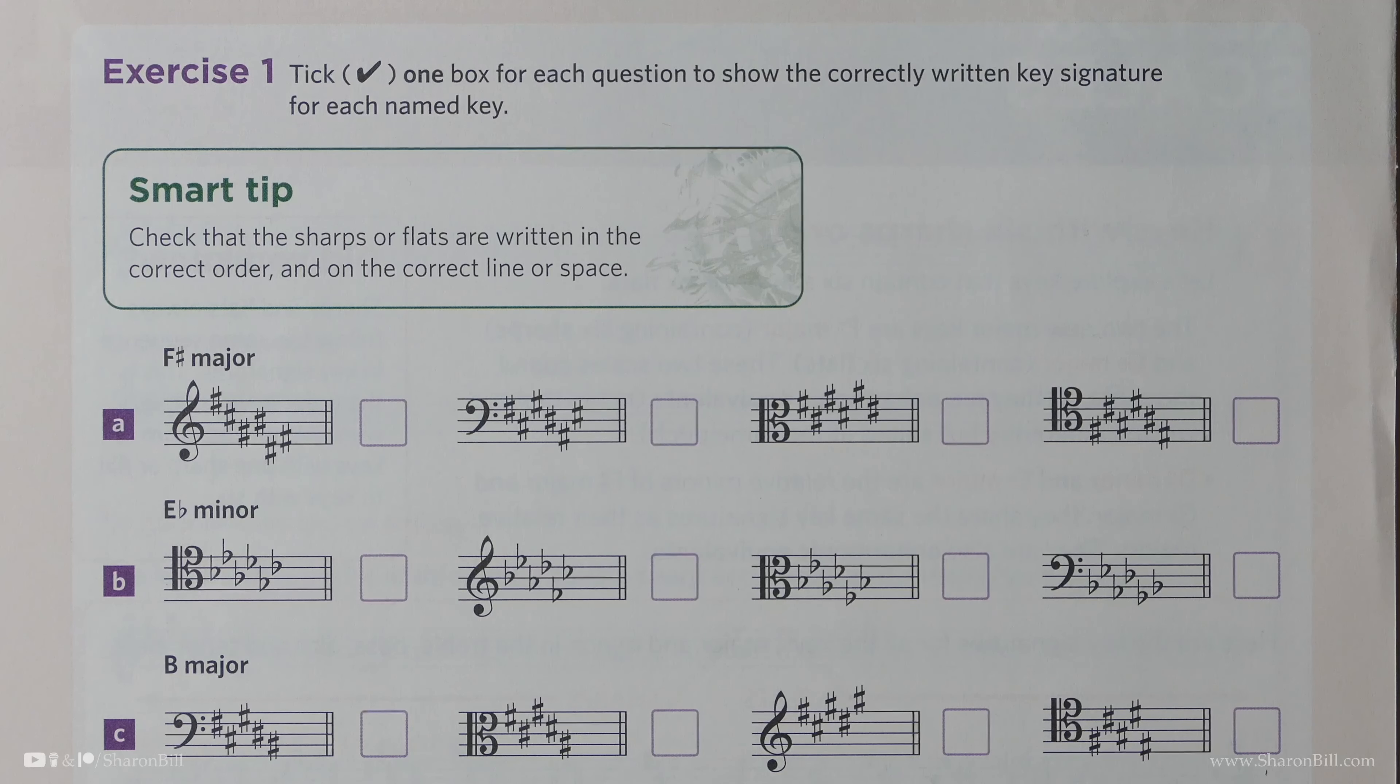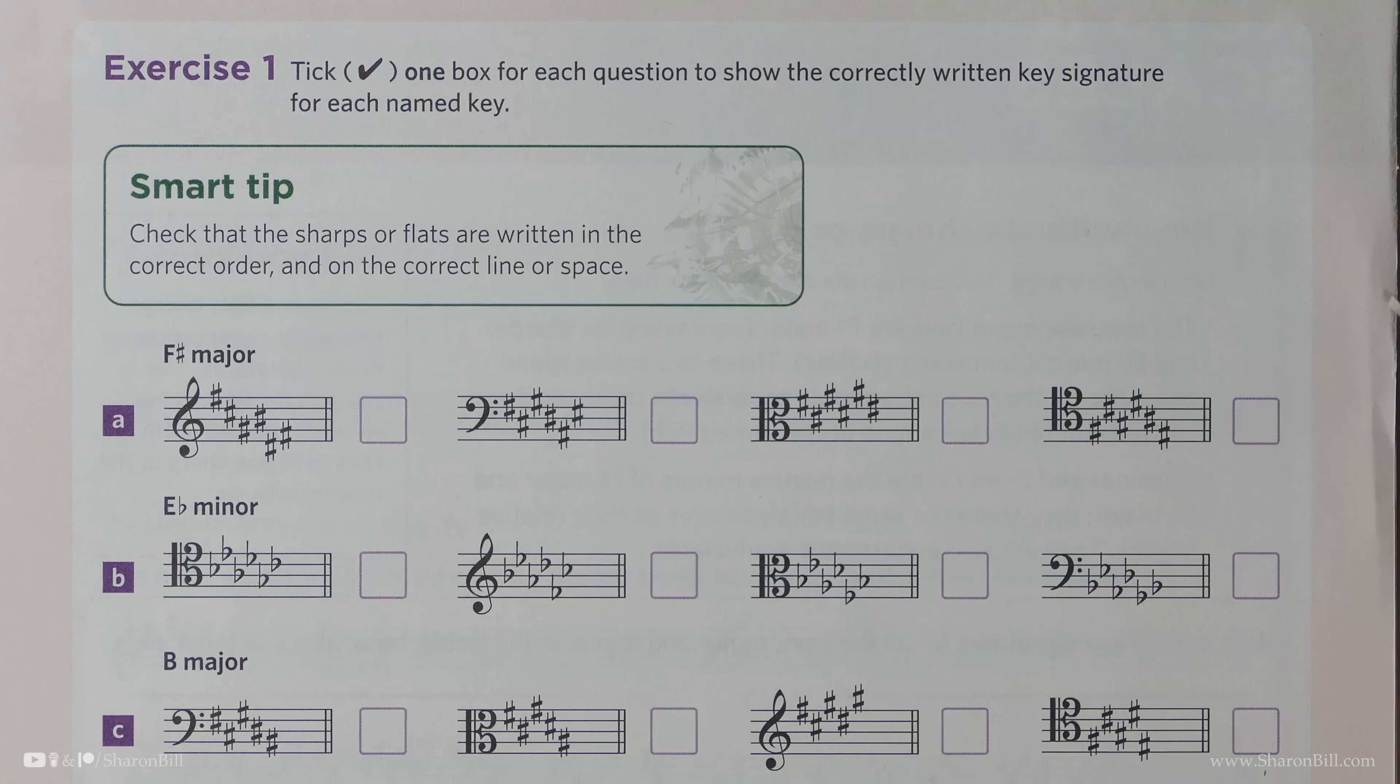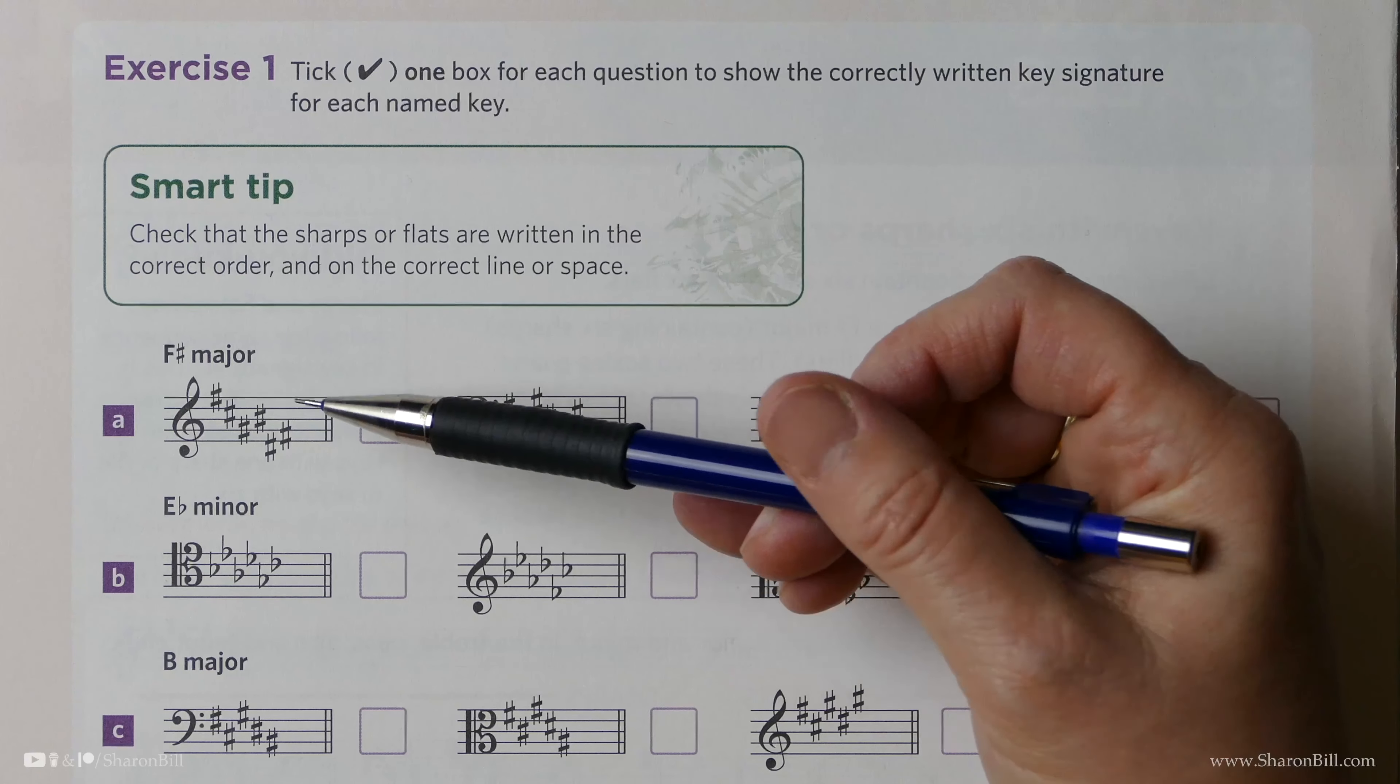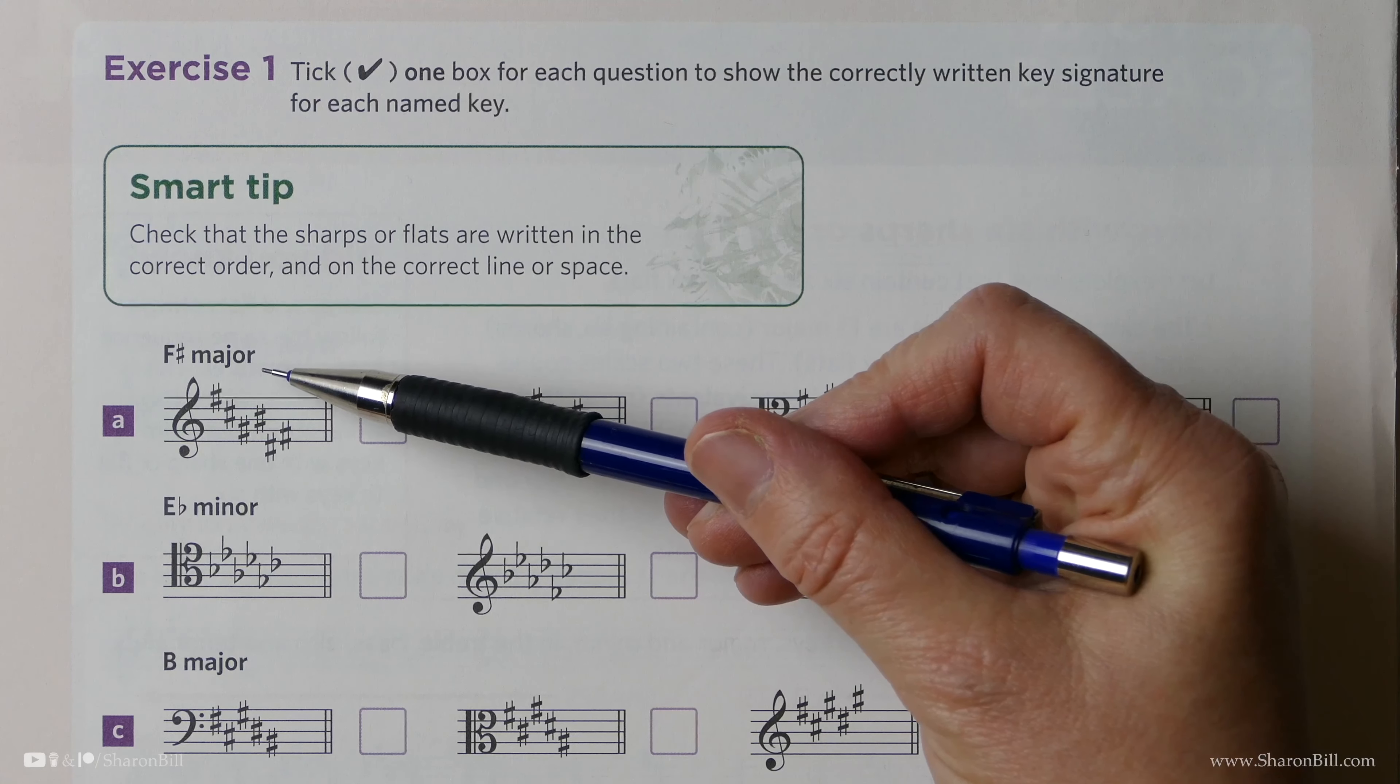Moving on with this topic of key signatures, we're on to page 28 of the Grade 5, Discovering Music Theory. And we're now looking at these key signatures, and we've got to check off which is the correct key signature. So only one of each of these sections is correct. So we need to suggest the correct key signature for F-sharp major.